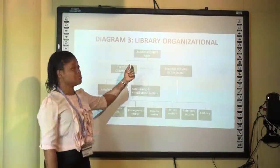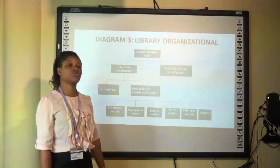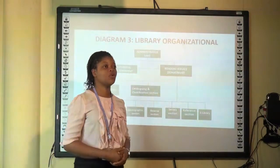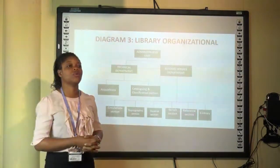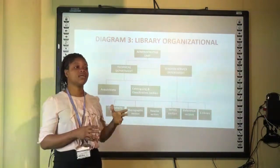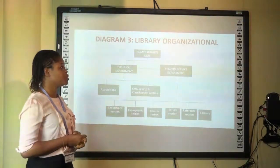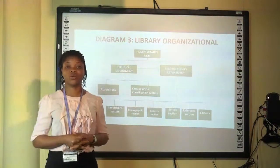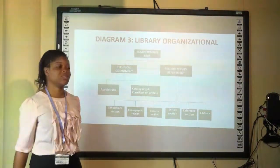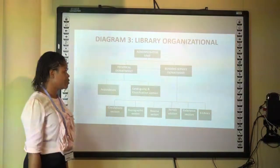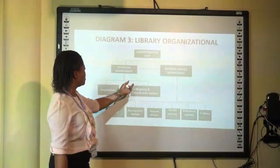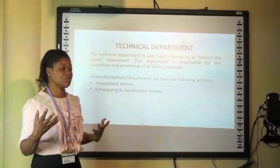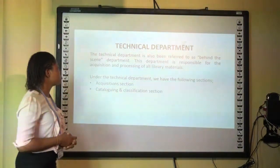The administrative department is usually headed by the university librarian, in an academic library setting. The librarian is usually responsible for the smooth running and supervision of human resources and other materials in the library. Now I'm going to be looking at each department and the units or sections under each of them.